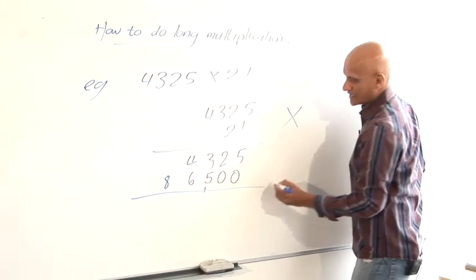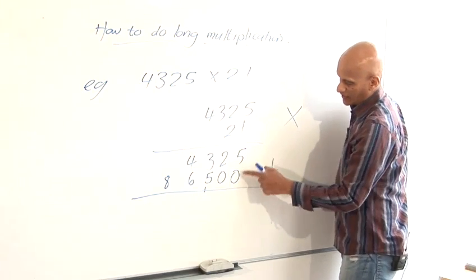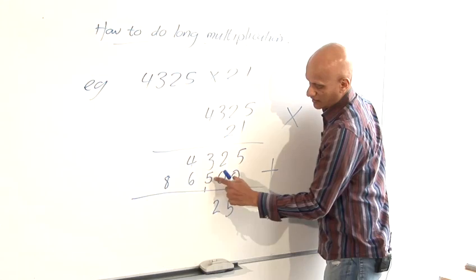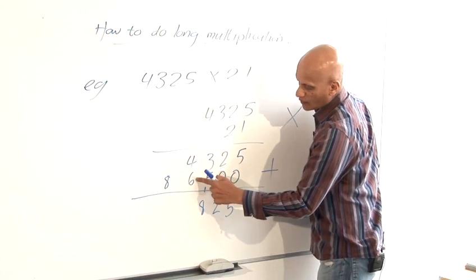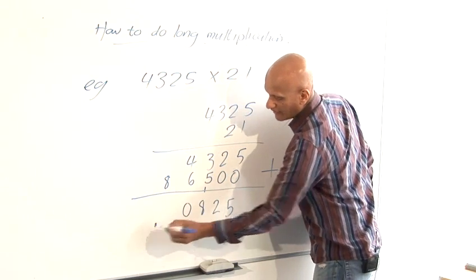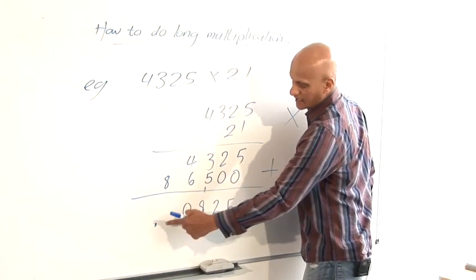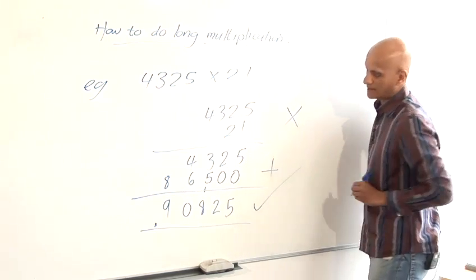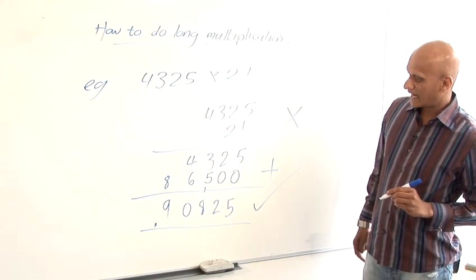And now all I'm going to do is add those together. So 5, 2, 3 and 5 would be 8. 6 and 4 will be 10 so I'm going to put the 0 here carry the 1 there and 8 and the 1 that I carried there is 9. And so there's my final answer. 90,825.